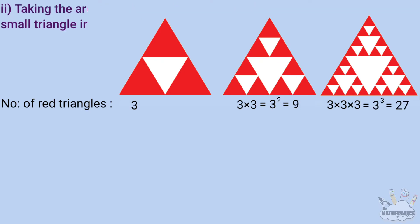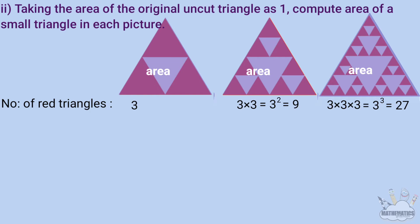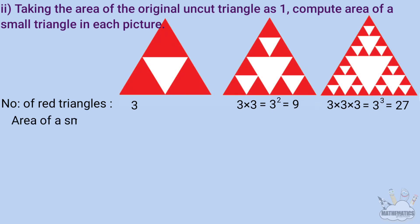The second question: taking the area of the original uncut triangle as 1, compute the area of a small (red) triangle in each picture. Each time the midpoints are joined, each triangle is divided into 4 equal smaller triangles, so each small triangle has area 1/4 of its parent.